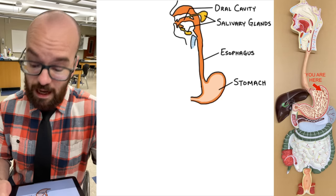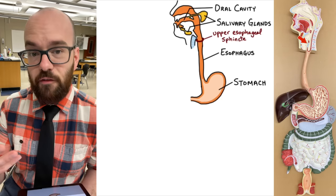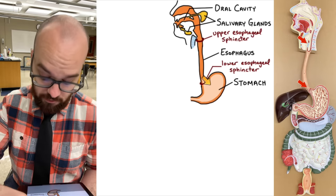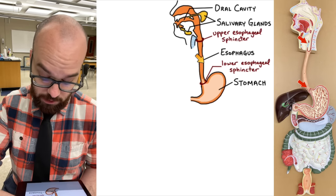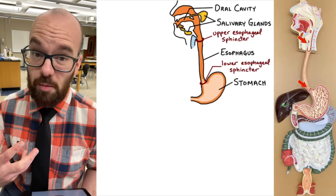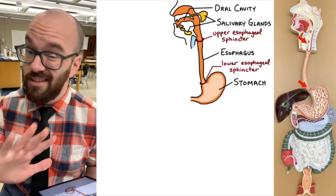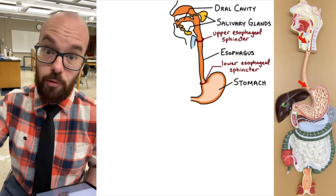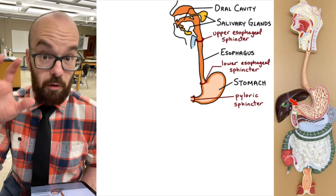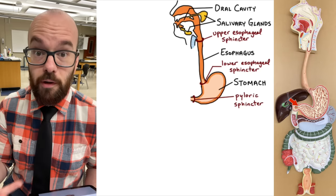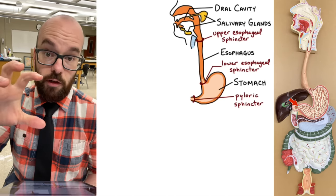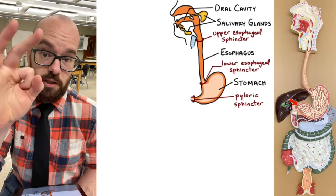Sphincters are circular muscles that work to close off parts of the digestive system when we don't want something to pass back and forth. We've got two in the esophagus — the upper esophageal sphincter on top and the lower esophageal sphincter on the bottom. These prevent acid from your stomach from going up into your esophagus and oral cavity, which would cause acid reflux or heartburn — nothing to do with your heart. Then on the other end of the stomach is the pyloric sphincter, which keeps food in the stomach long enough for proper digestion before it moves to the intestines.